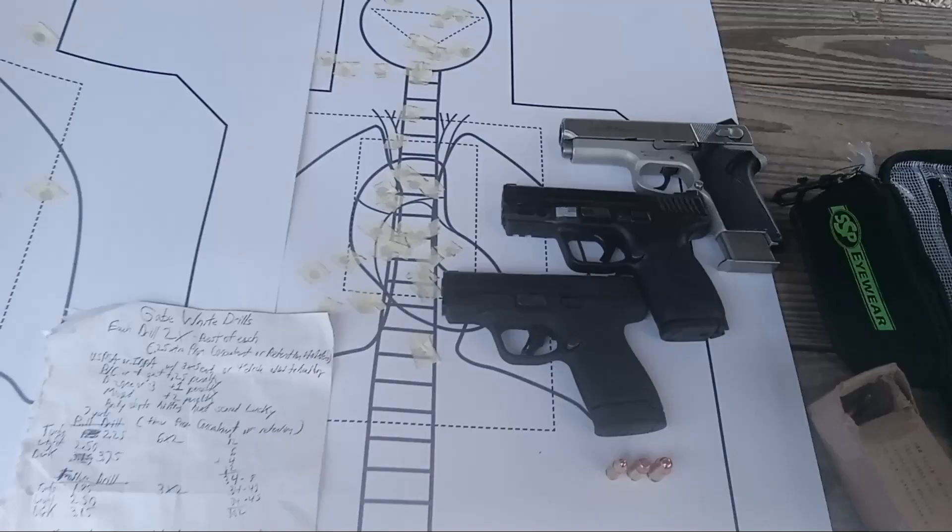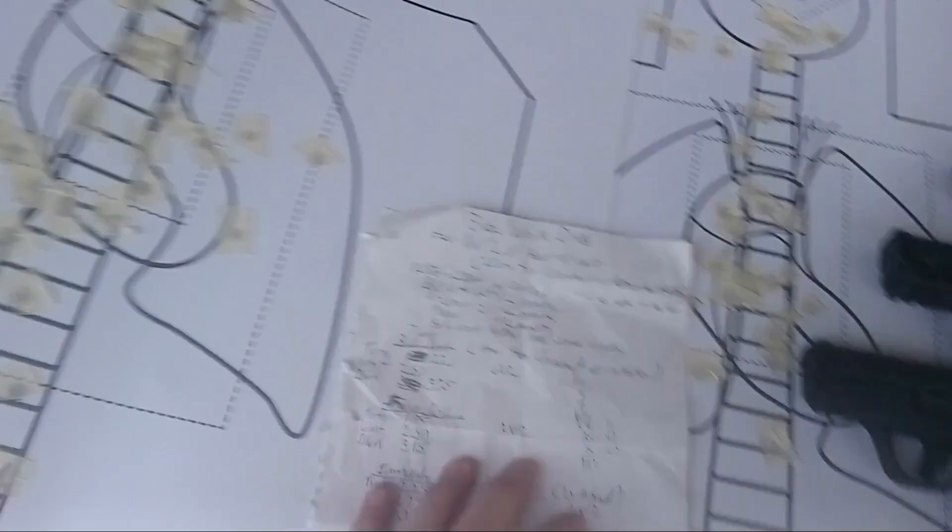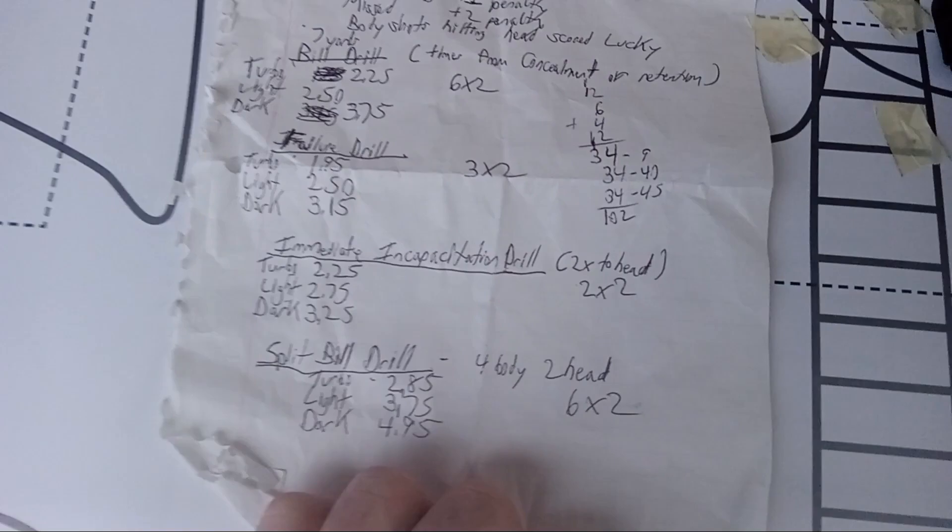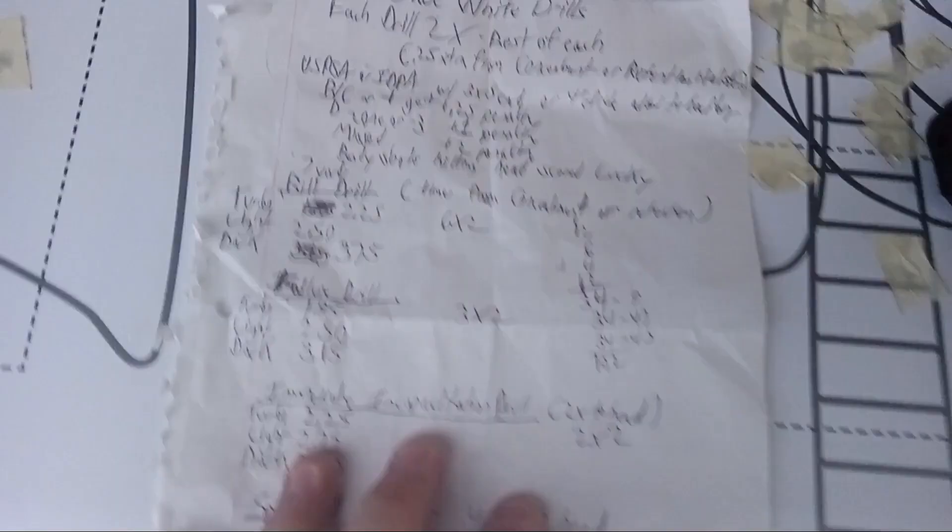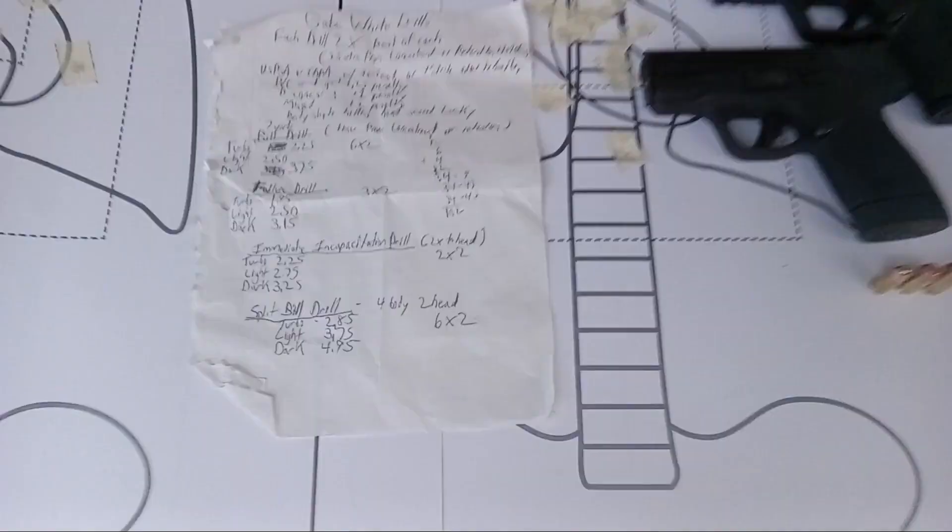To wrap up the 9 versus 40 versus 45 and Gabe White drills - they're pretty hard. Two of them are more than doable to the dark level: immediate incapacitation and the split bill drill if you practice it. Failure drill I should have had down but being cold I didn't do as good as I should have. The biggest one, most difficult one time-wise to make good A zone hits, is the bill drill.